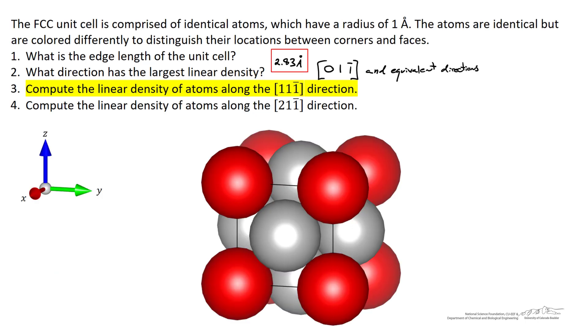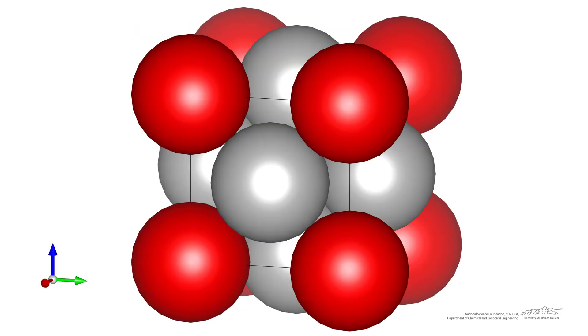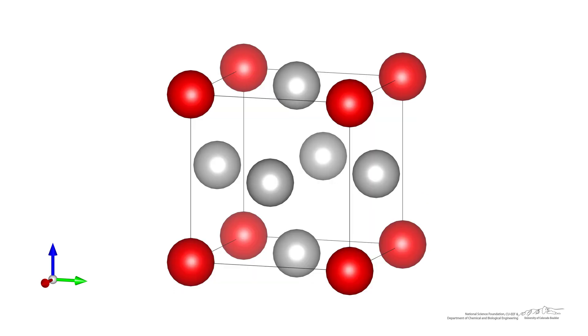The third question asks us to compute the linear density of atoms along the [1, 1, -1] direction. So we start in the upper left corner, we've got a unit of 1 in the x direction, another unit in the y direction, and a negative 1 in the z direction. So what we're looking at is a distance that spans the diagonal of the unit cell. It may be easier to view this instead of a space filling model, we'll decrease the diameters of the atoms so we can see a bit more clearly.